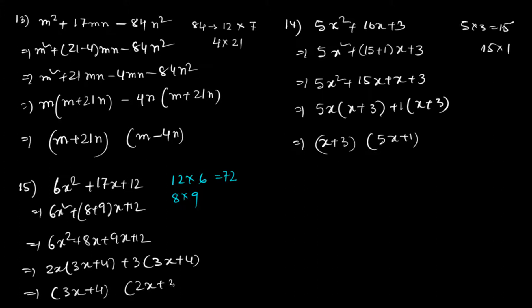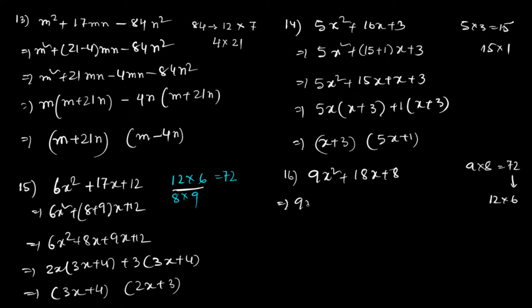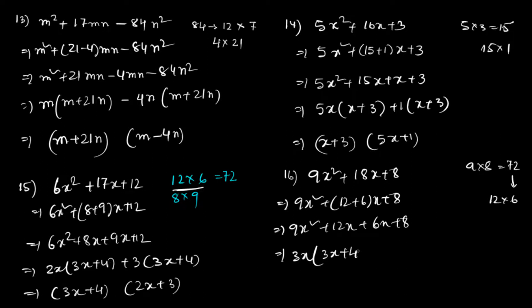Let's do the 16th one: 9x² + 18x + 8. So 9 times 8 is 72, and from 72 I need to get 18 using 12 and 6. So it's 9x² + 12x + 6x + 8. Taking 3x common gives 3x(3x + 4), and taking 2 common gives 2(3x + 4). Taking (3x + 4) common gives (3x + 4)(3x + 2).